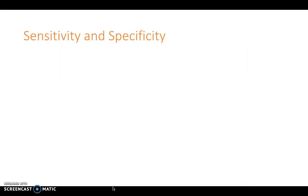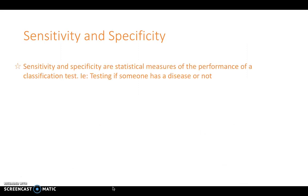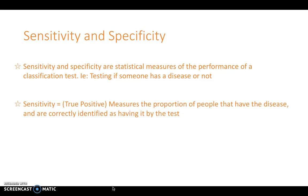Next, we look at sensitivity and specificity, which are statistical measures of the performance of a classification test — for example, testing whether someone has a disease or not. Sensitivity essentially means true positives: it measures the proportion of people who have the disease and whom the test correctly identifies as having the disease.